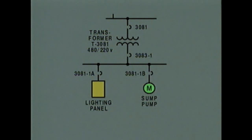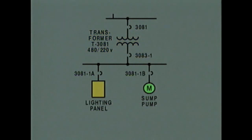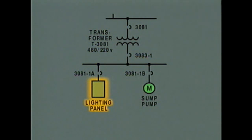After the circuit breaker, power passes through a power transformer. A power transformer converts the relatively high voltage from the load center to a lower voltage for the equipment fed by the circuit — in this case, the transformer changes the voltage from 480 volts to 220 volts. From the power transformer, power flows through another circuit breaker and then to a circuit that supplies a lighting panel, which supplies power to several lighting circuits, and to a sump pump motor.